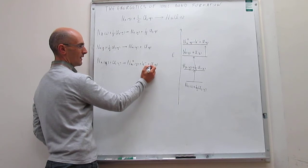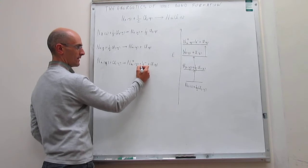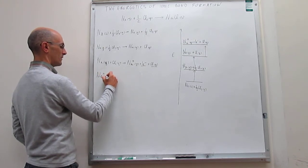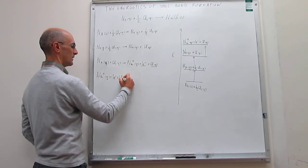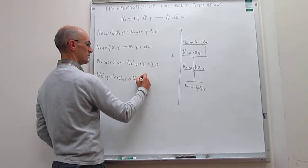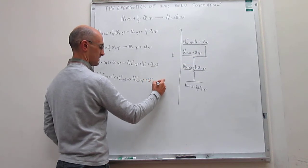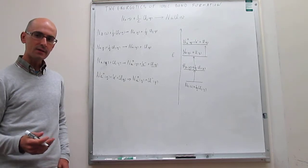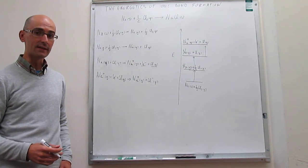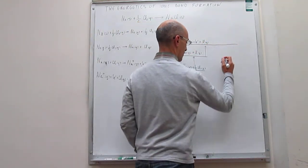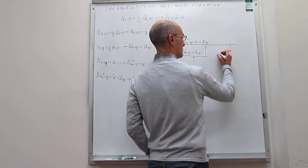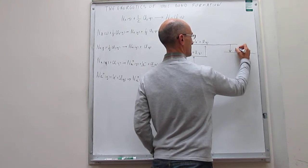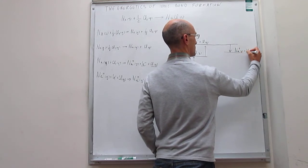The next step is this chlorine atom forming a negative ion. When you add the electron to the chlorine atom, you form a Cl⁻ ion. So Na⁺ plus one electron plus the chlorine atom gas generates Na⁺ gas plus Cl⁻ gas. The energy involved in this process is what we call the electron affinity of chlorine. That process is now favorable because chlorine has a high tendency to form the negative ion, so we start to get some energy back.